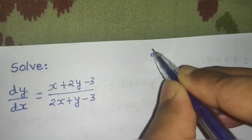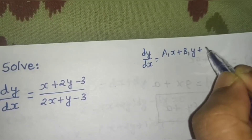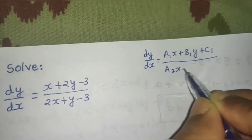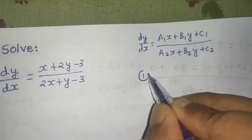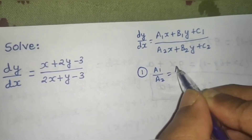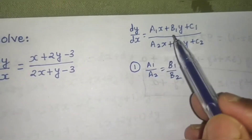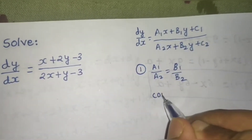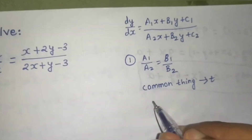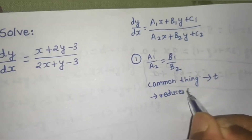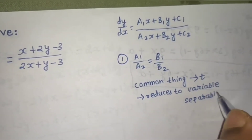If the question is of the form dy/dx = (a1*x + b1*y + c1) / (a2*x + b2*y + c2), then we have two types of problems. In the first type, a1/a2 = b1/b2. In that case, something will come common in both numerator and denominator. You take that common thing as t or z, and it reduces to variable separable form, which you already know how to solve.